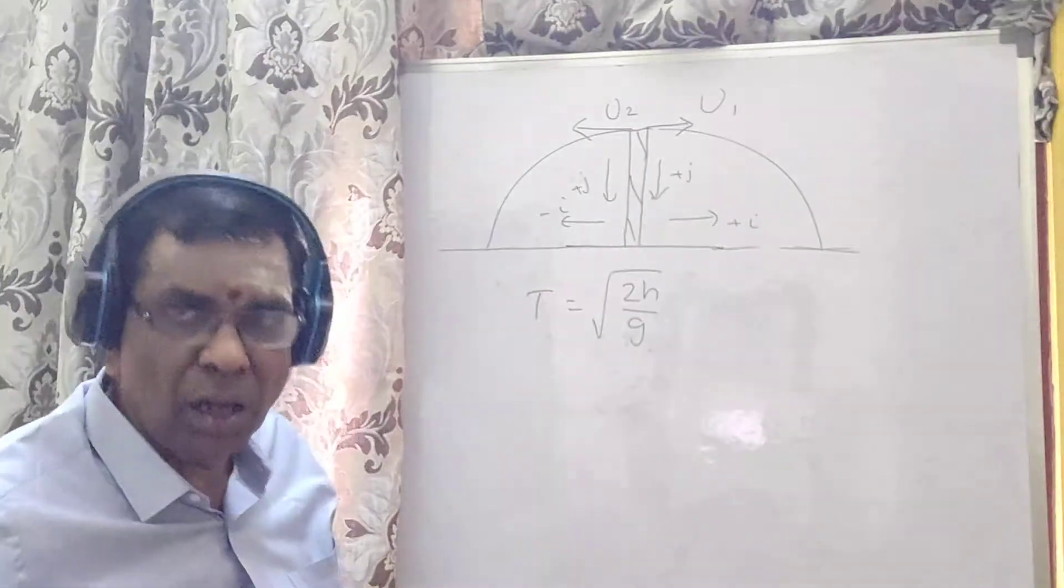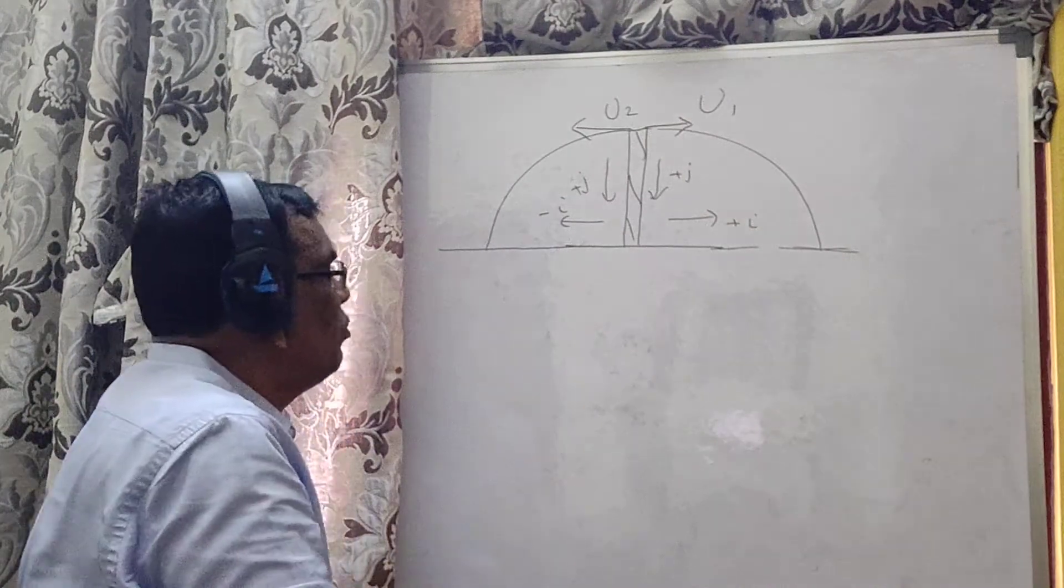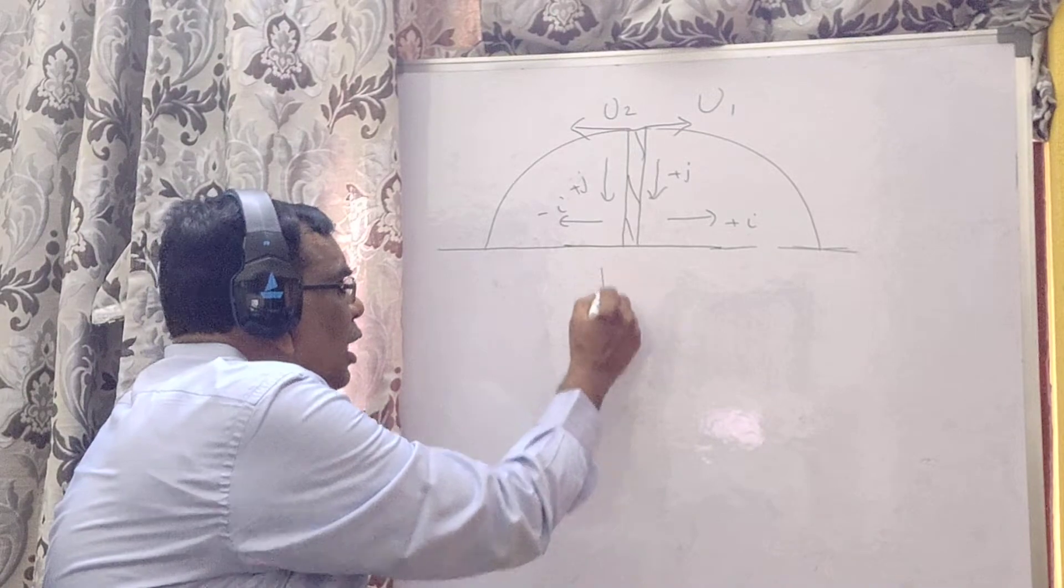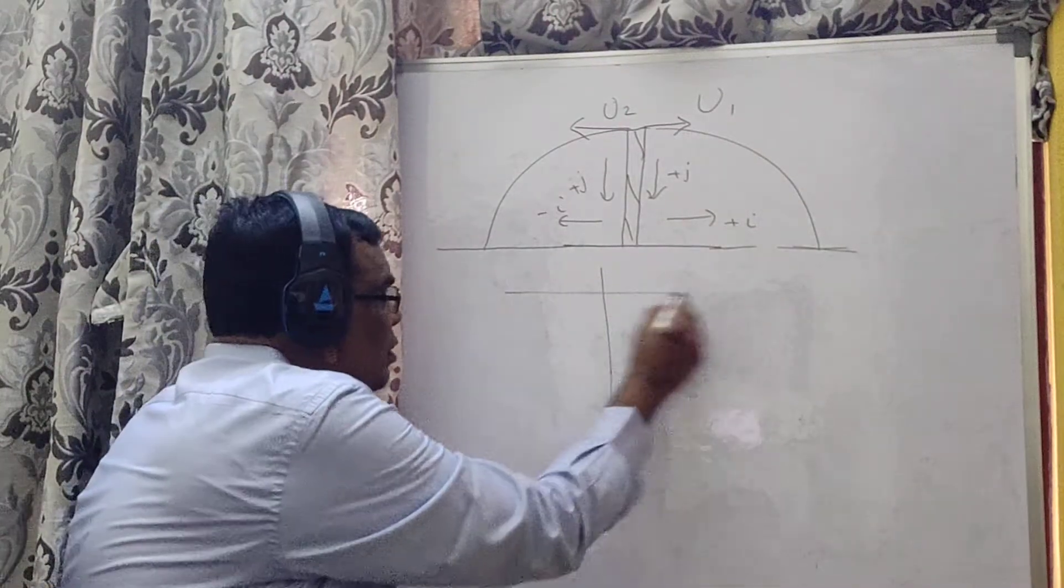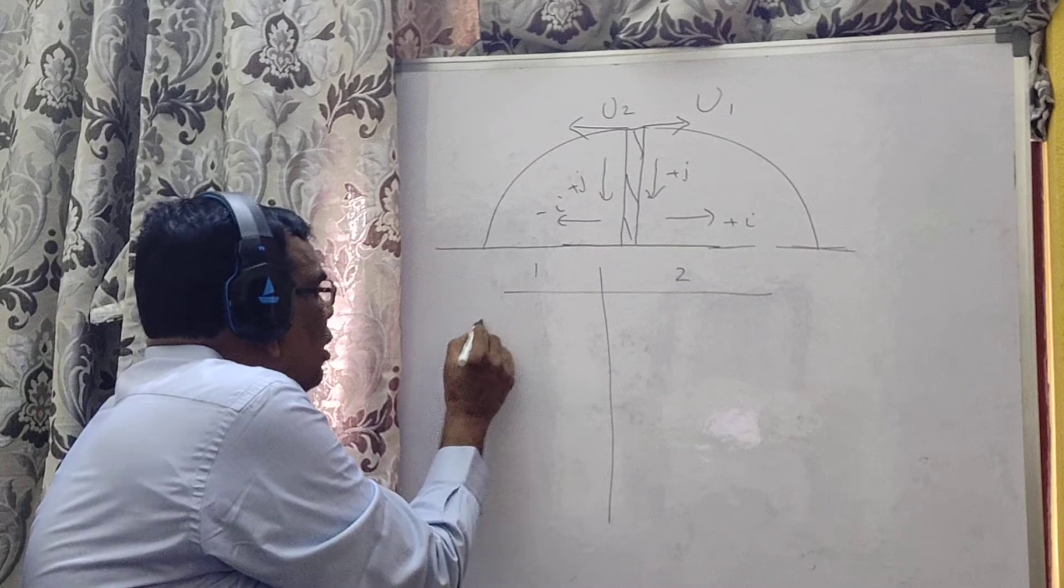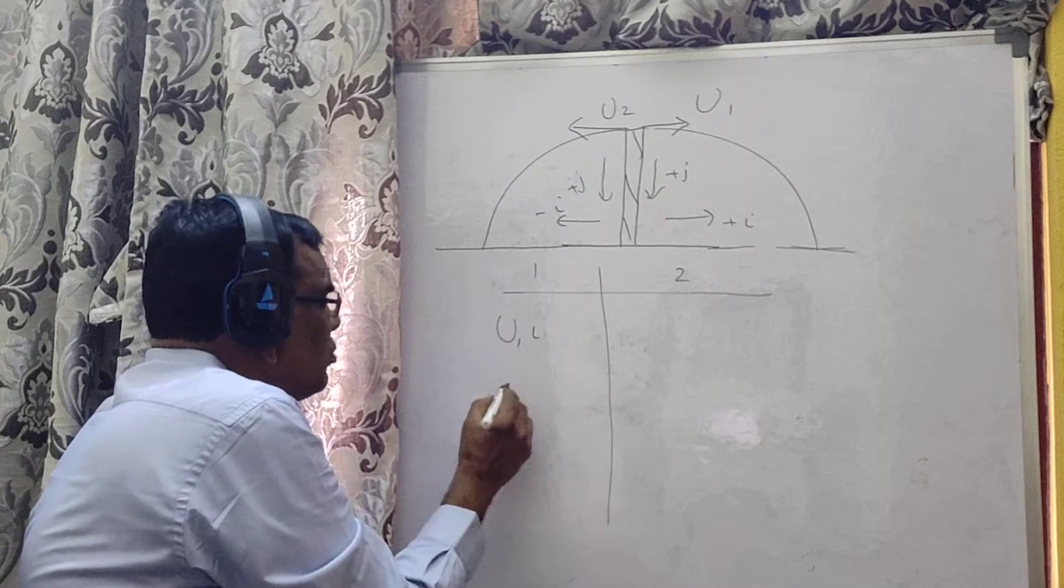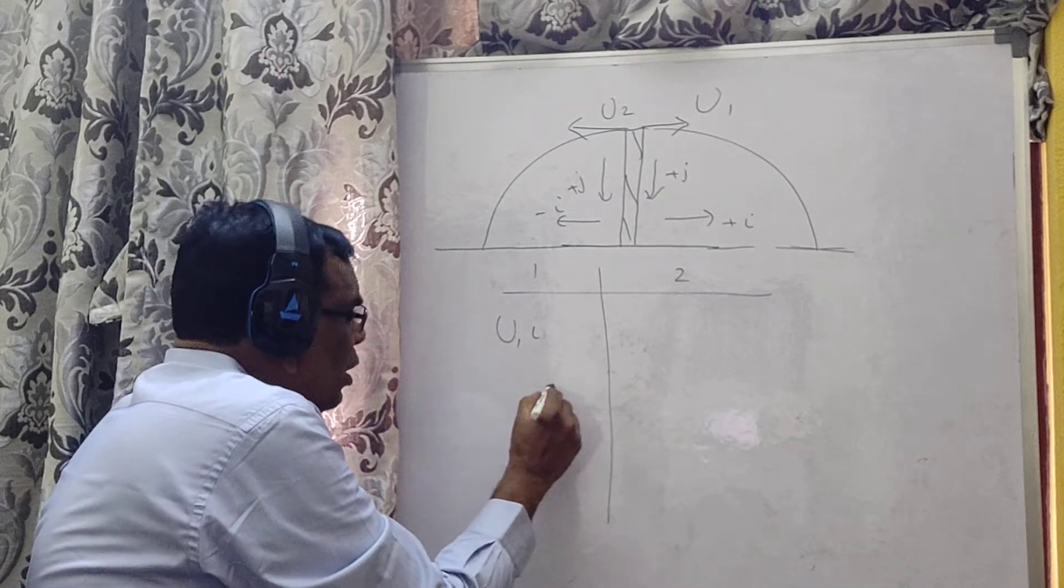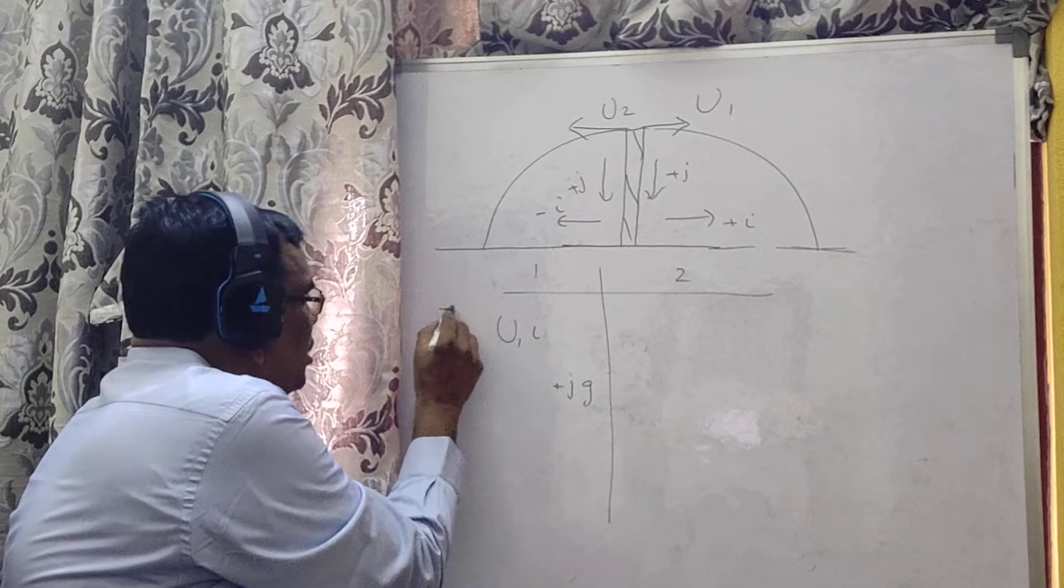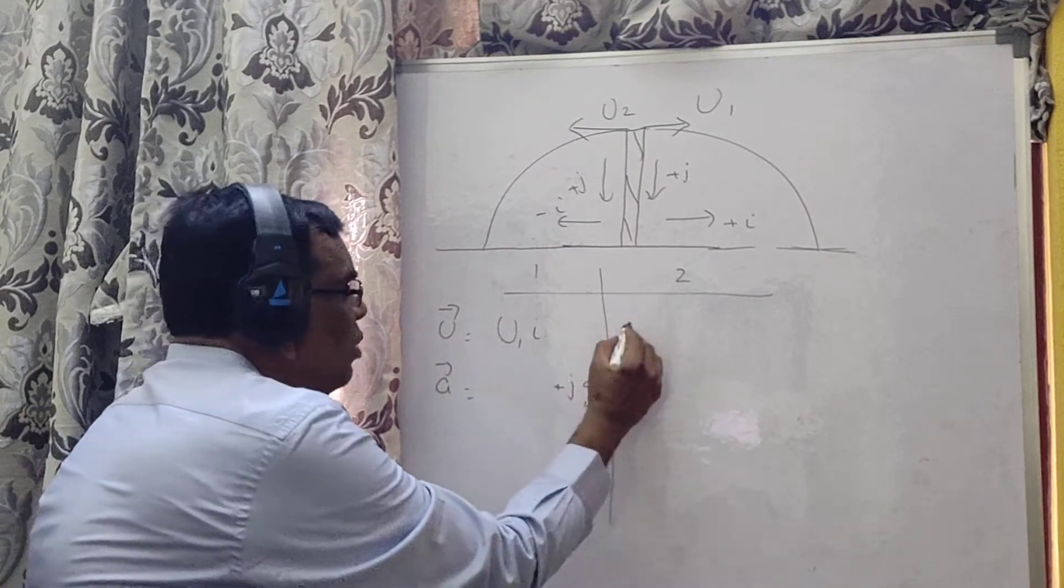Now, if I am going to draw these equations for both these cases, the purpose for which I have drawn this, I will give you like this. This is the first particle, this is the second particle. First equation is u1i plus jg. Now, this is u bar, this is a bar.